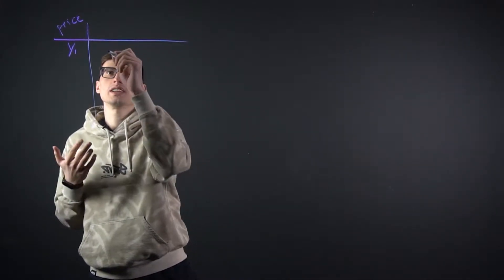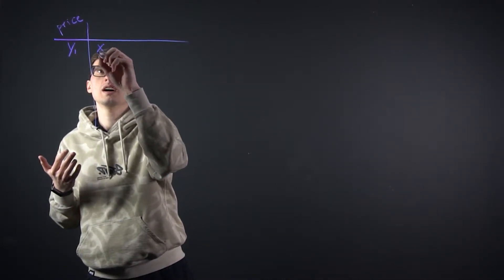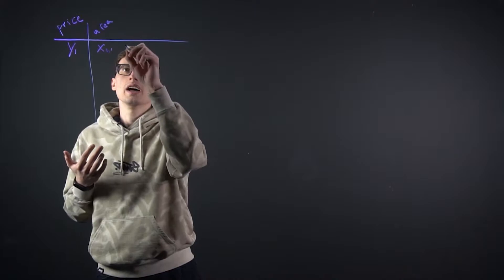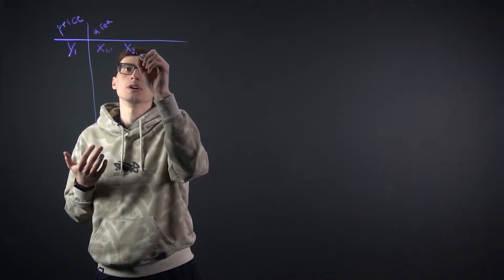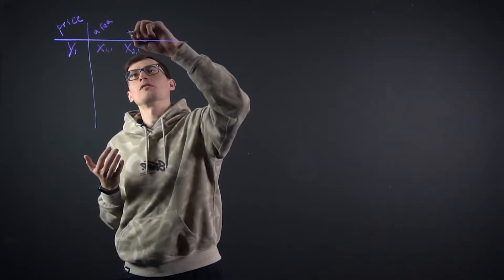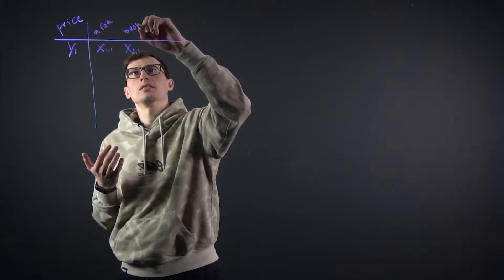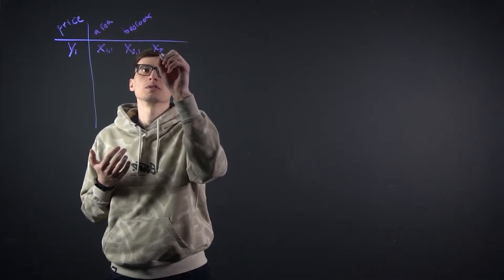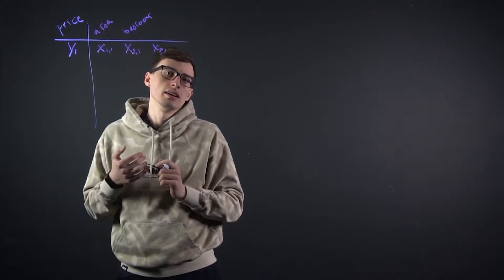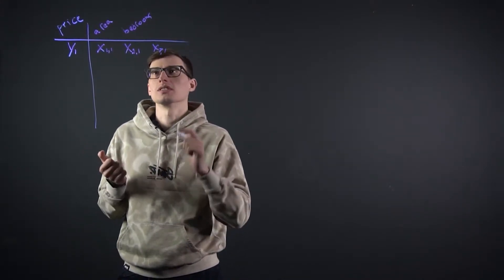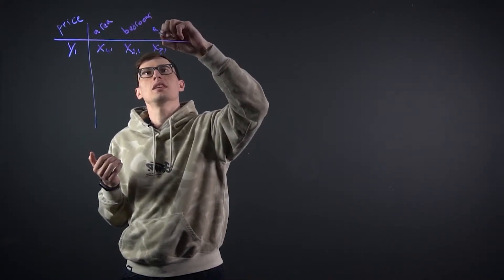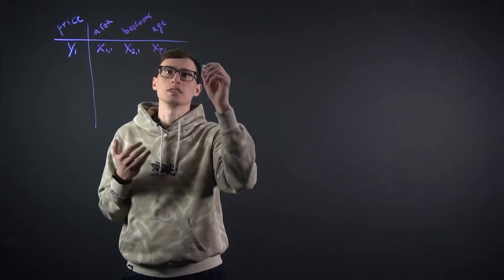So x1 will be our area of the house — the square feet area. x2 will be the number of bedrooms. The third variable, x3, will be the age of the house — how old it is.